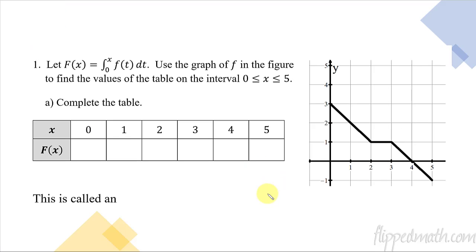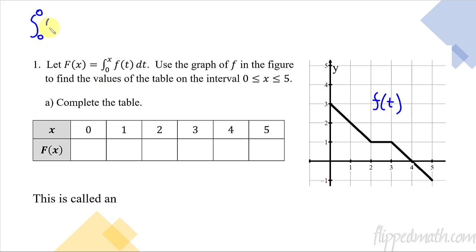Now we will take this function — from 0 to x of little f. Over here on the graph we can label this one little f of t. We are going from 0 to 5, so let's do an accumulation of what is happening in the area under the curve. If we say x is 0, what we're really saying is: what is the integral from 0 to 0 of little f of t? The area from 0 to 0 is nothing, so that equals 0.